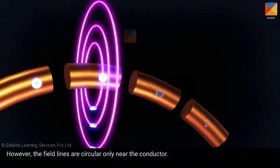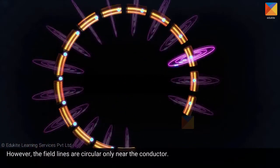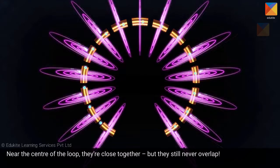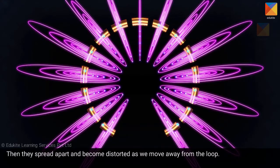However, the field lines are circular only near the conductor. Near the center of the loop, they are close together, but they still never overlap. Then they spread apart and become distorted as we move away from the loop.